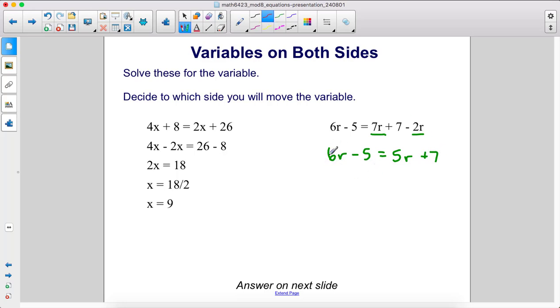We have 6r here, 5r here. Let's subtract 5r from both sides, and that's going to give us 1r, or just r, on the left side, equals 7.